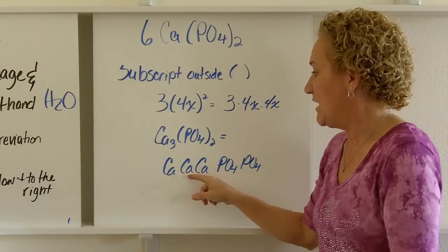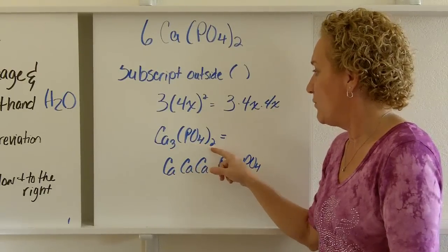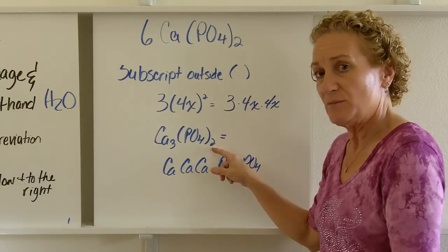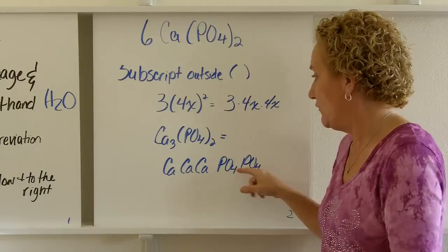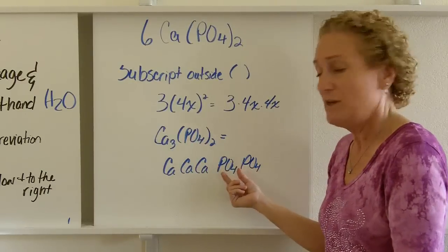Ca3 means I have 3 calciums. And (PO4)2, with a subscript 2 outside of the parentheses, means I have PO4, PO4. I have two of these little puppies called PO4.